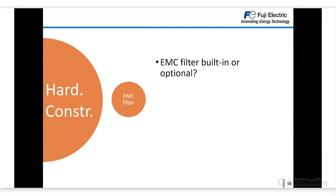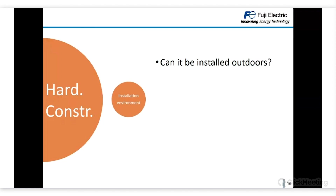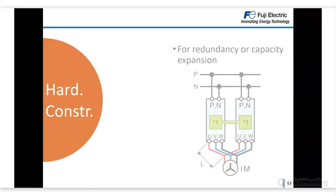Regarding EMC filters, whether built-in or optional and whether they affect overall dimensions is important. Our standard MEGA has a built-in EMC filter across the whole range without modifying overall dimensions — even a version without the filter would have the same dimensions. For ACE and MINI that is not the case, but in Europe our standard always includes a built-in EMC filter. HVAC and Aqua also have built-in EMC filters complying up to C2 category at 75 meters, while MEGA is C3 at 10 meters for most sizes. Installation environment is also a factor — whether the inverter can be used outdoors, in corrosive gas environments, or in second or third pollution degree environments.